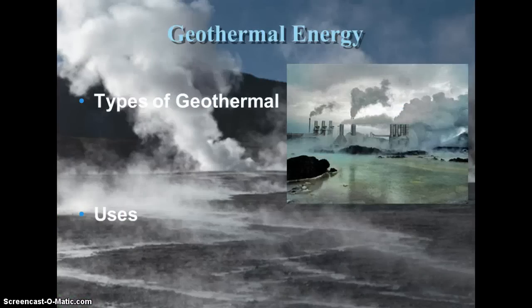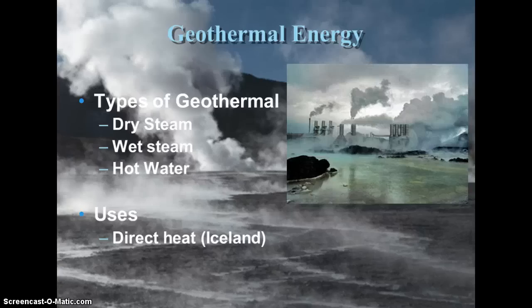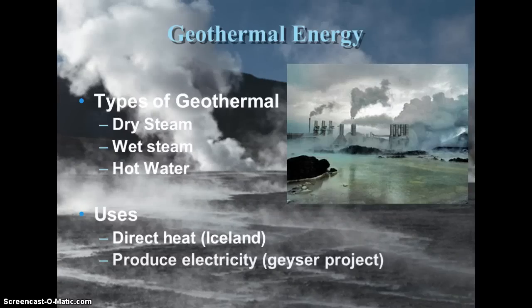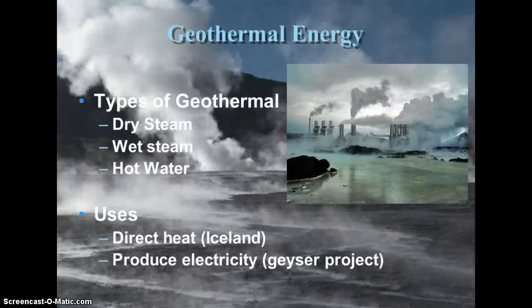Geothermal energy — geo meaning earth, therm meaning heat — is heat from the earth. There is dry steam, wet steam, and hot water. It can be used as direct heat; Iceland, for example, uses heat from the earth's interior to heat homes without paying for electricity. We can also use geysers to produce electricity, just like turning a turbine.